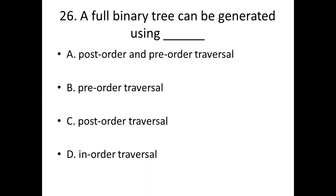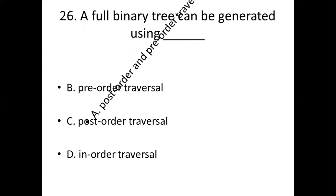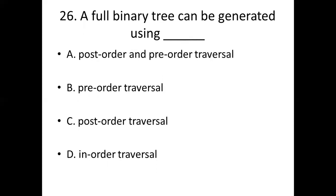Twenty-sixth bit. A full binary tree can be generated using dash. Option A, post-order and pre-order traversal. Option B, pre-order traversal. Option C, post-order traversal. Option D, in-order traversal. Answer: Option A, post-order and pre-order traversal.